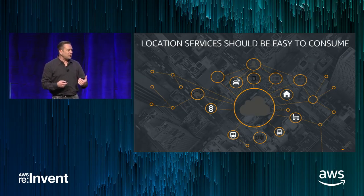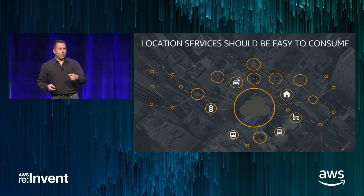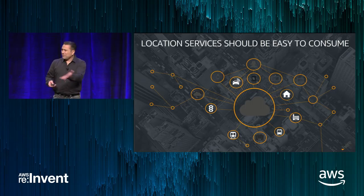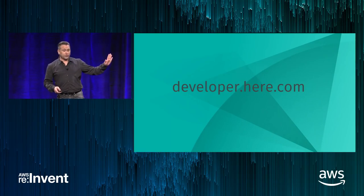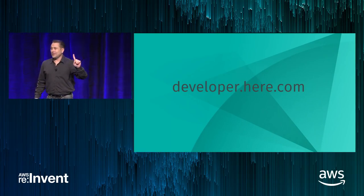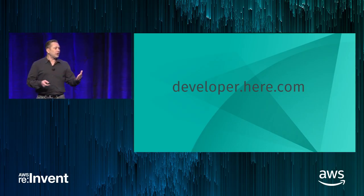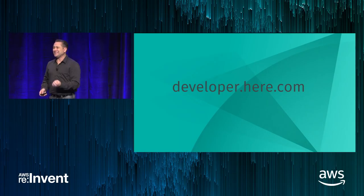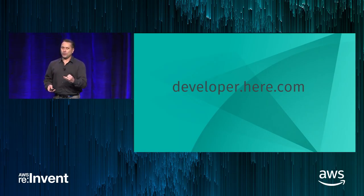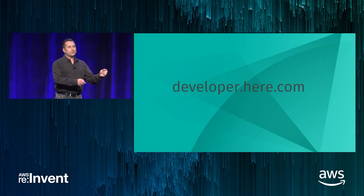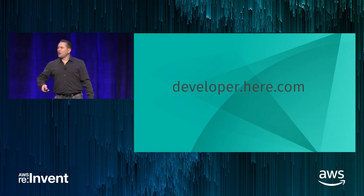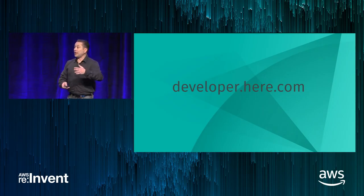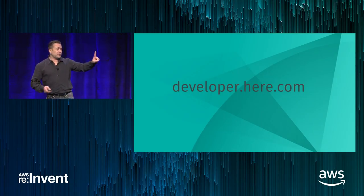We are impatient when it comes to location — we want it now. It should be easy to consume whether in person or with technology. So what is HERE going to do to make that easy for you? Step one: you need to register at developer.here.com as a developer, because you need the app ID and the app code that are requirements to make calls to our APIs or use our mobile SDKs. Whether you choose a free trial or the public basic plan that's free, that's step one.